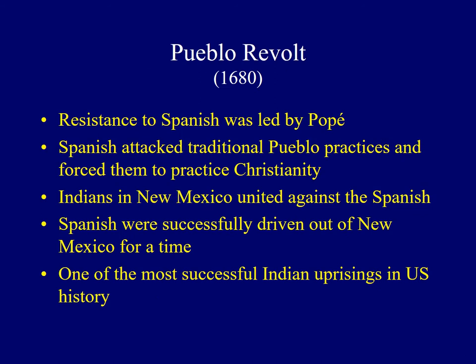The Spanish remained in New Mexico for several decades until a rebellion succeeded in forcing them to leave. The person who led this fight was Pope, who played on the tremendous resentment of the Spanish growing over years due to attacks on traditional Pueblo practices and forced Christianity. By the mid-to-late 1600s, many began returning to their traditional ceremonies. Pope successfully united all Indians in New Mexico against the Spanish, and in 1680 staged the Pueblo Revolt. The Indians captured Santa Fe and drove the Spanish out for about 10 years — about 400 Spanish colonists were killed. The Pueblo Revolt was one of the most successful Indian uprisings in American history.